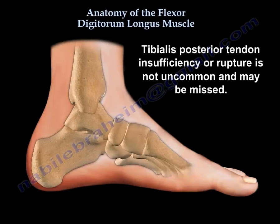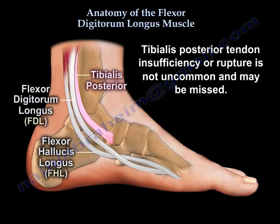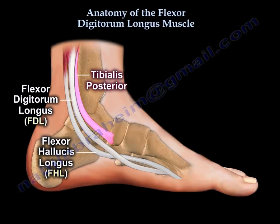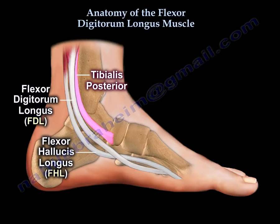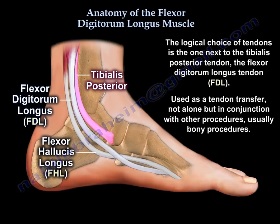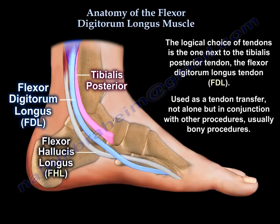Tibialis posterior tendon insufficiency or rupture is not uncommon and it can be missed, but when it is diagnosed it will be treated properly by a protocol. One of the treatment options is to borrow a tendon next to it to reinforce the function of the tibialis posterior tendon. The logical tendon that's next to it is the flexor digitorum longus tendon, so we use it as a tendon transfer — not alone, but in conjunction with other procedures, usually bony procedures.